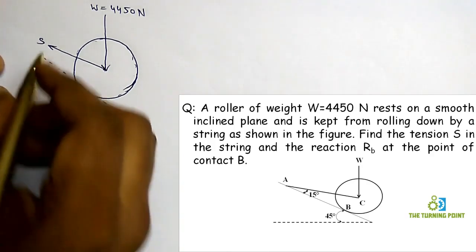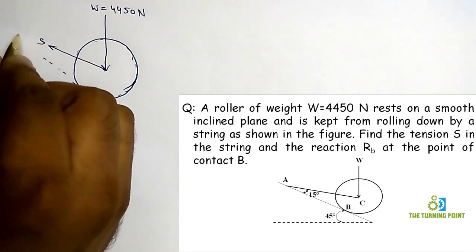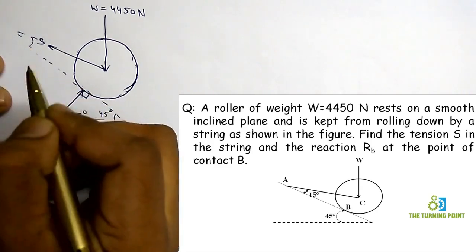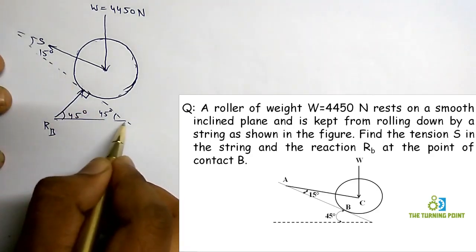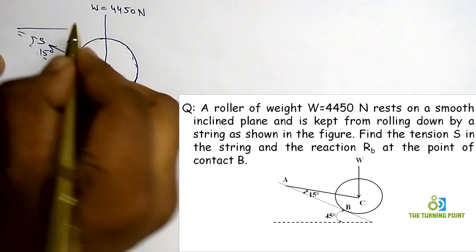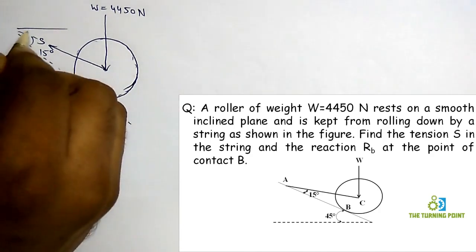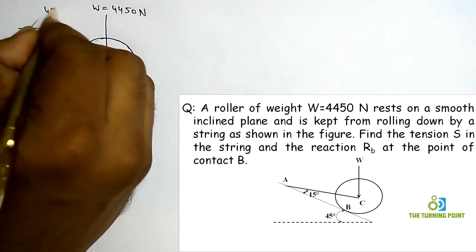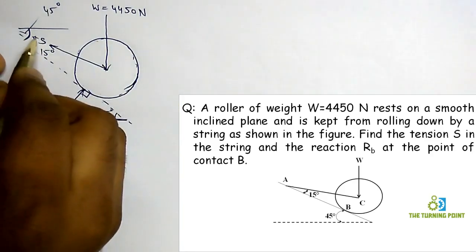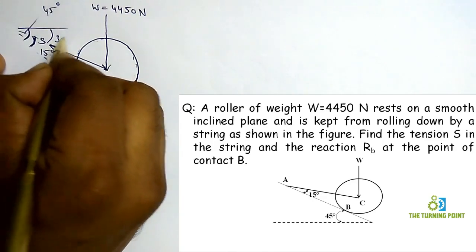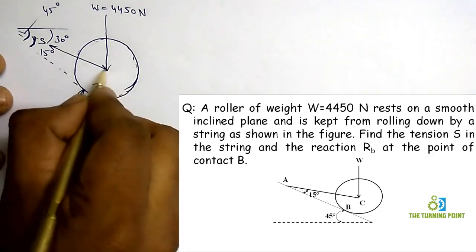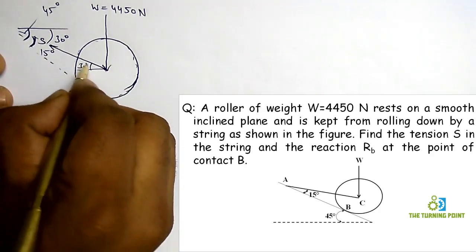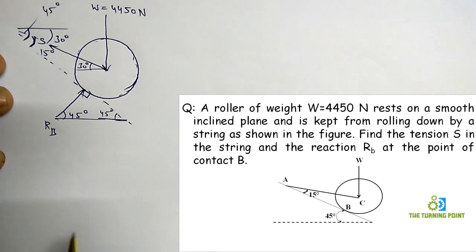Next, we have to find the inclination of S. This angle is given as 15 degrees in the problem, and the inclined plane makes an inclination of 45 degrees with the horizontal. So this angle will be 45 minus 15, which equals 30 degrees. That means the tensile force S is making an inclination of 30 degrees with the horizontal.